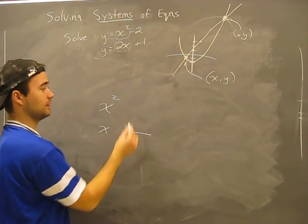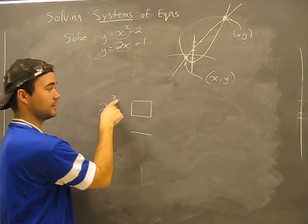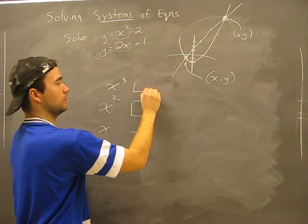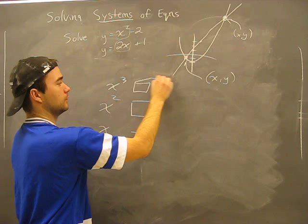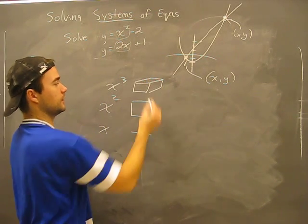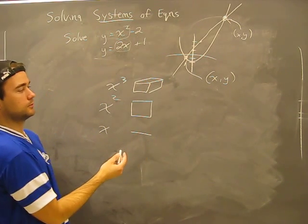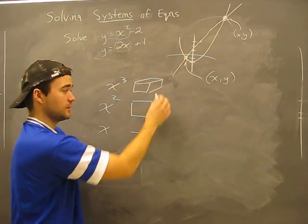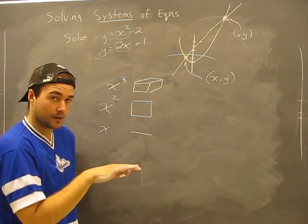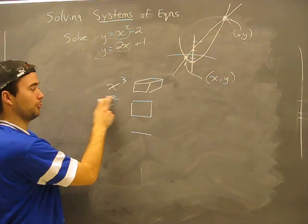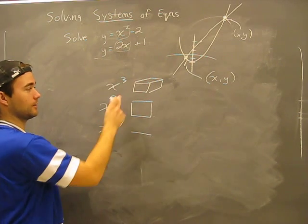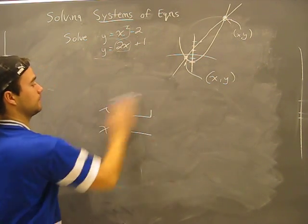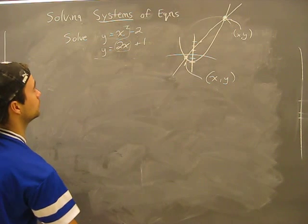This is a line, this is a square — similarly, this is a square. Can you combine a line and a square? Is this the same as this, and is this the same as this? No. So likewise, you cannot combine these together — they're their own animal.